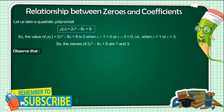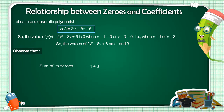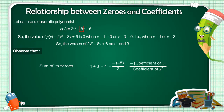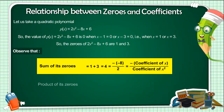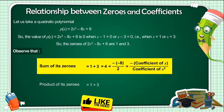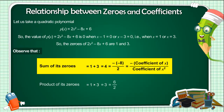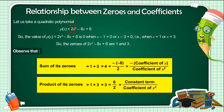Observe that the sum of its zeros equals 1 plus 3, which equals 4, which equals minus(minus 8) upon 2 — that is, minus the coefficient of x upon the coefficient of x². The product of its zeros equals 1 into 3, which equals 3, which equals 6 by 2 — that is, the constant term upon the coefficient of x².